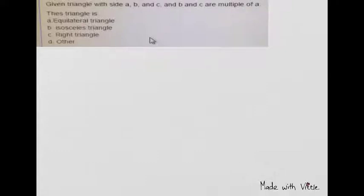Let's solve some mathematical tasks. The question is, given a triangle with sides equal to A, B, and C, and we know that B and C are multiples of A, we should determine what type of triangle is it. Is it equilateral or isosceles or right triangle, or other types?